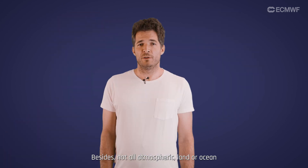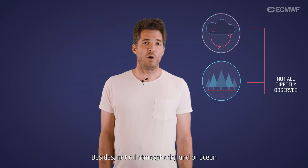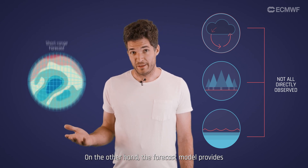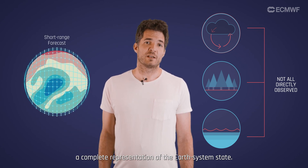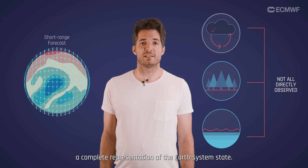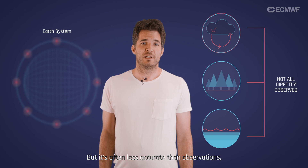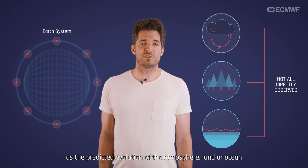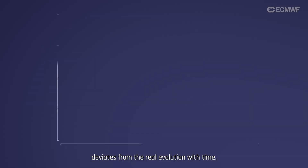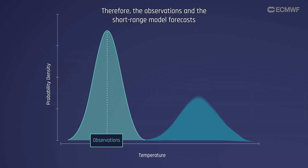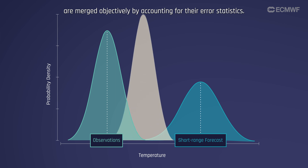Besides, not all atmospheric, land, or ocean characteristics can be directly observed. On the other hand, the forecast model provides a complete representation of the Earth system state, but it's often less accurate than observations, as the predicted evolution of the atmosphere, land, or ocean deviates from the real evolution with time. Therefore, the observations and the short-range model forecasts are merged objectively by accounting for their error statistics.